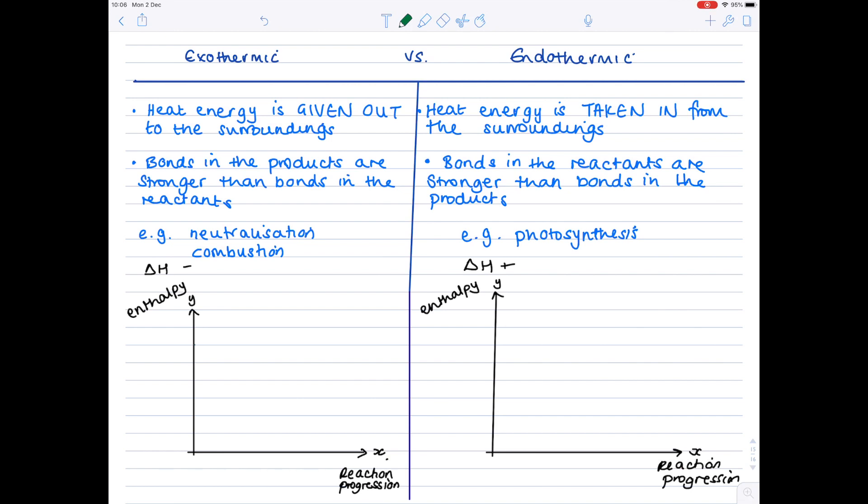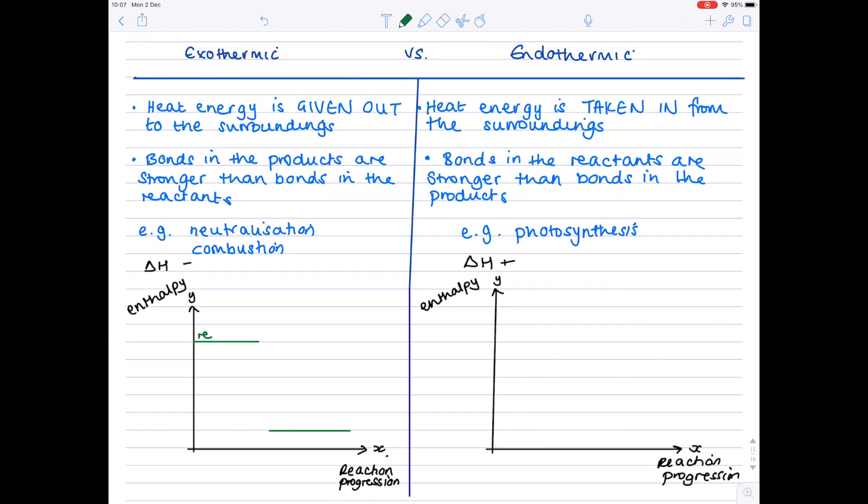So let's start by showing our reactants. It doesn't really matter where you show them, they just have to be higher than the products. Then label. So here are our reactants and here are our products. Then you need to simply draw an arrow between the two showing the enthalpy change delta H, which we can see here is negative.